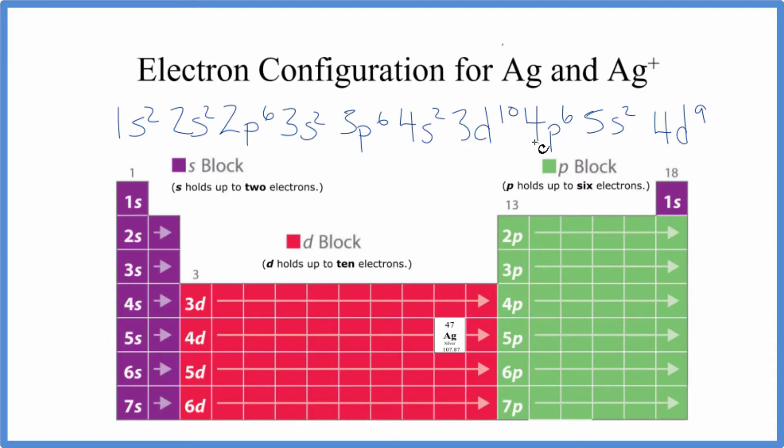This is the electron configuration for Ag just based on using this table. If you used one of these electron configuration charts, you'd get the same answer. So all these numbers add up to 47. Silver, though, is an exception, so we have to think about this a little bit more. This is not correct.